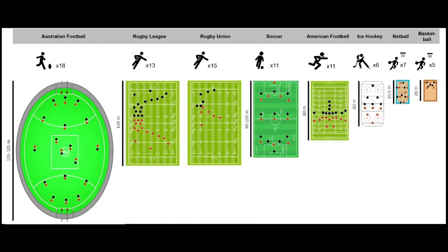For example, if we consider linemen in American football, is using high-speed running as relevant a metric for their positional demands as it is for other positions on the field? We really have to consider the dimensions of the playing area, player density, positional characteristics, the rules of the game, and some of the time features of the game to help us determine which tracking technology metrics may be most suited to our sport.